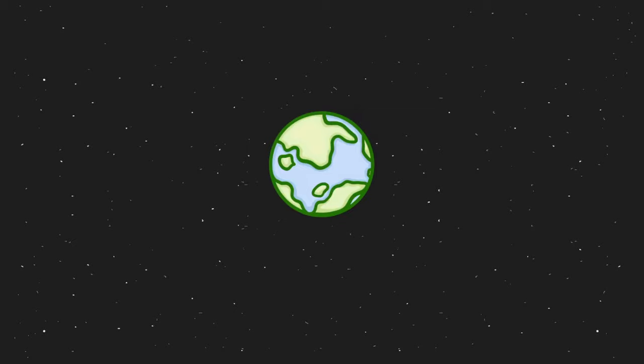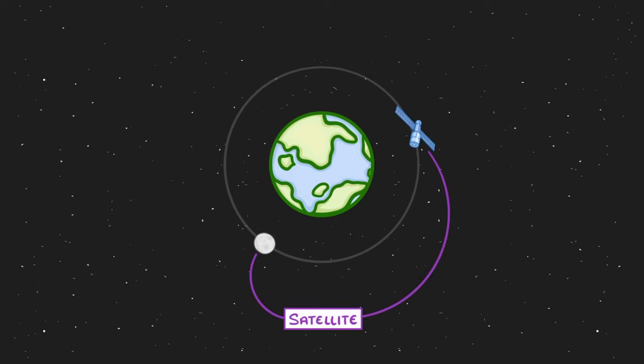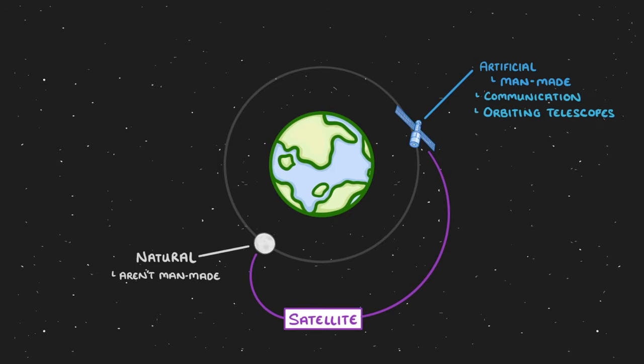Let's start with a typical planet like Earth. Anything that orbits a planet is called a satellite, and satellites can either be natural or artificial. Natural satellites like our moon aren't man-made, whereas artificial satellites are man-made and include the satellites we use for communication and other things like orbiting telescopes.